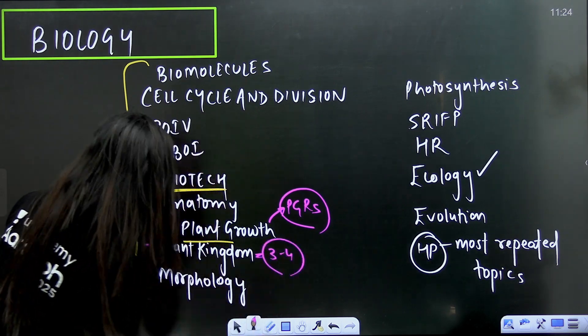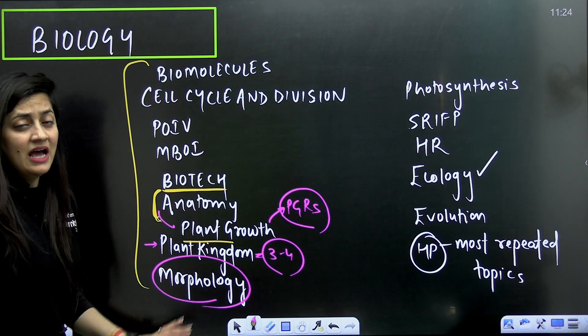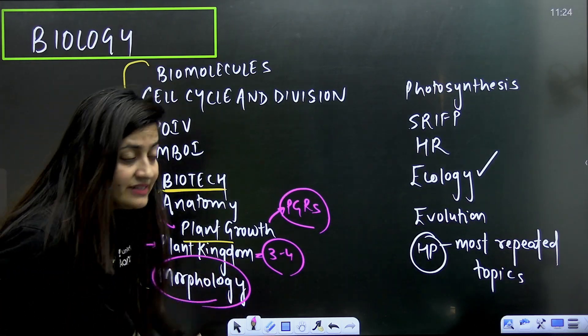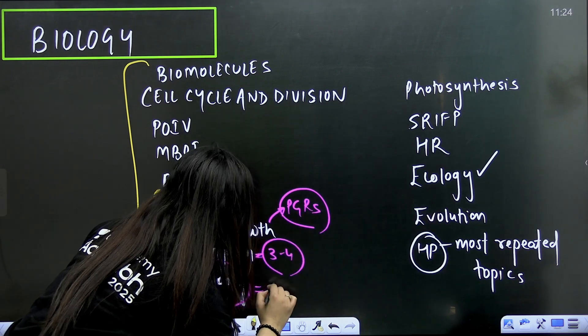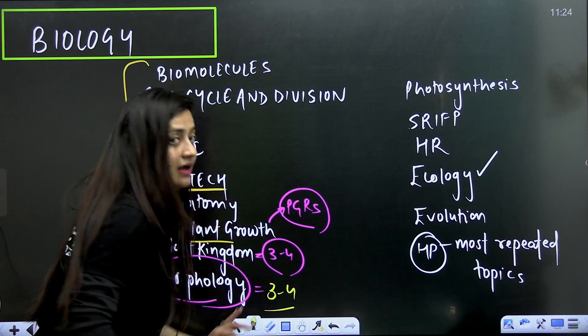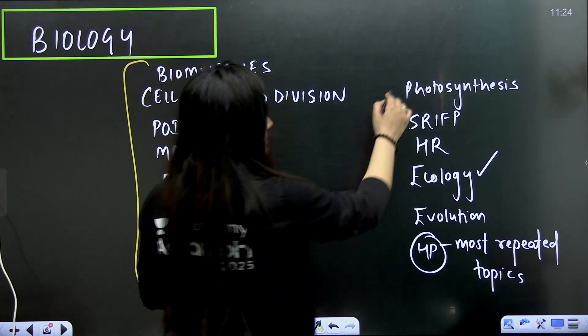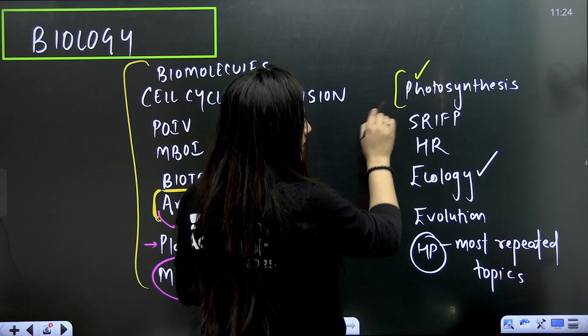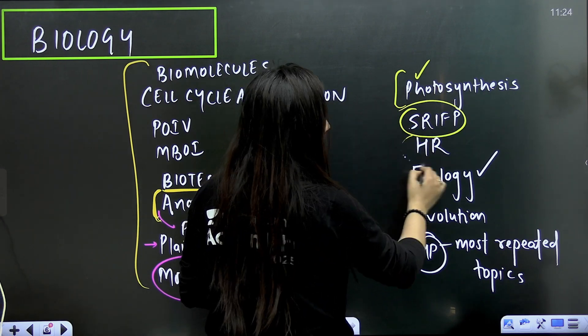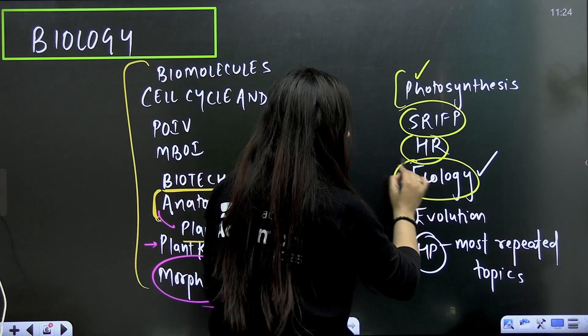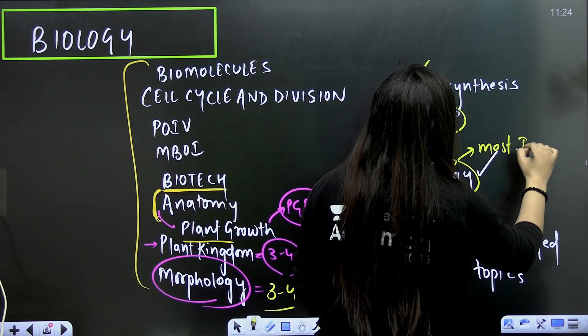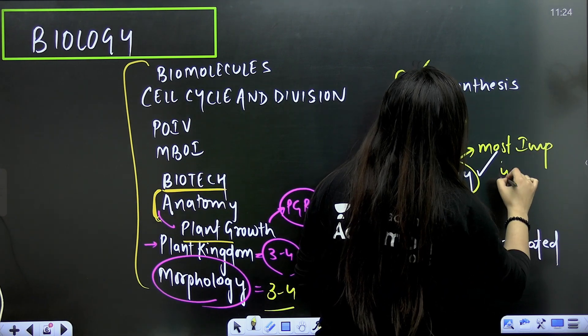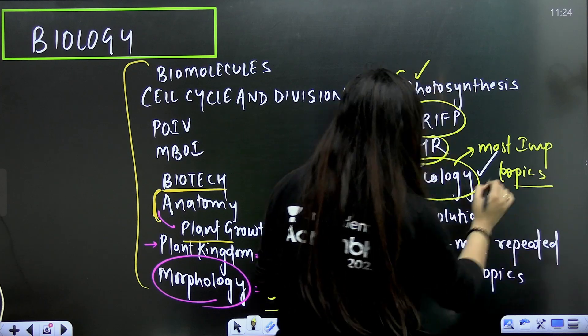Then plant kingdom. Yes, three to four questions can come from this particular part. And morphology. I am not specifying the families here, but from the morphology part as well, three to four questions can come from the examples. Then photosynthesis. Again, go for the most important topics here. Sexual reproduction in flowering plant. Human reproduction, very easy. Ecology, the complete unit. And for ecology also, go for all the chapters, you can pick up the most important topics as well.